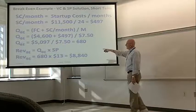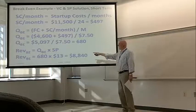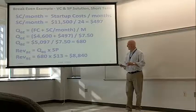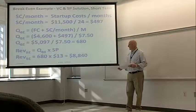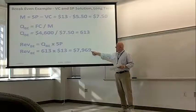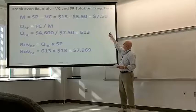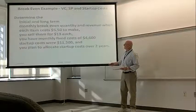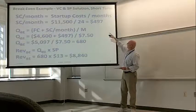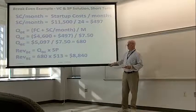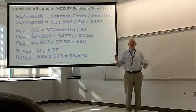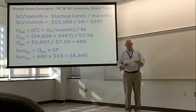So, 680. Breakeven revenue, 680 times $13, or $8,840, which is a little bit more than $7,969. In fact, it's $497 more, because that's what the additional expense that has to be made up for the first two years.